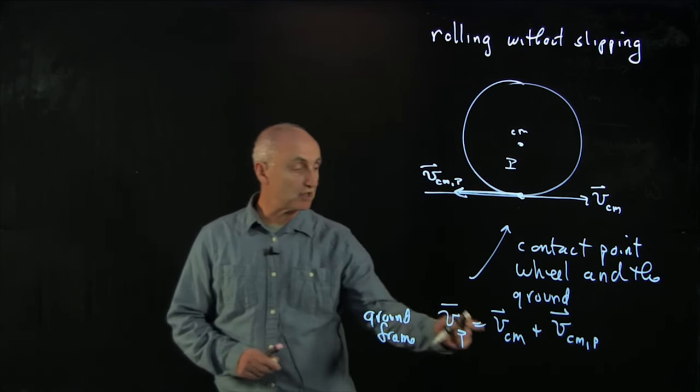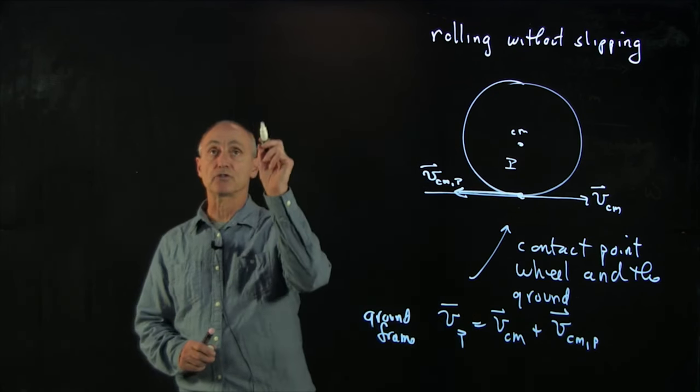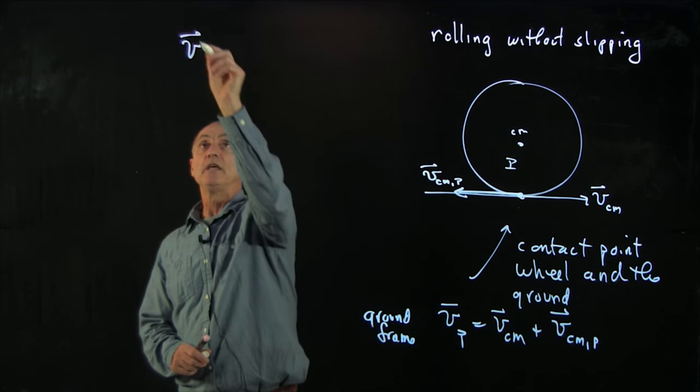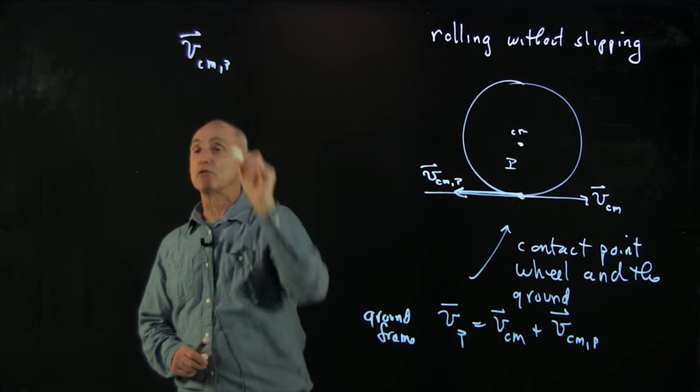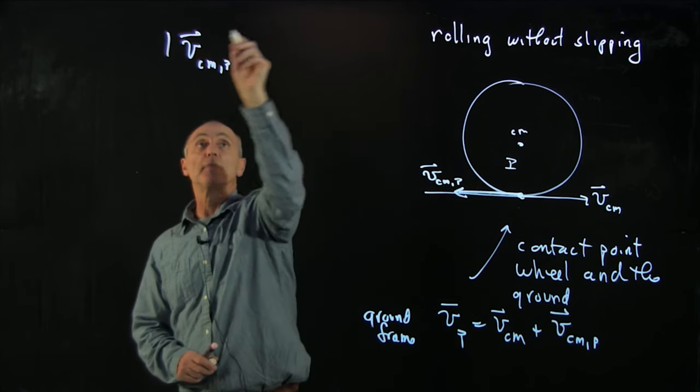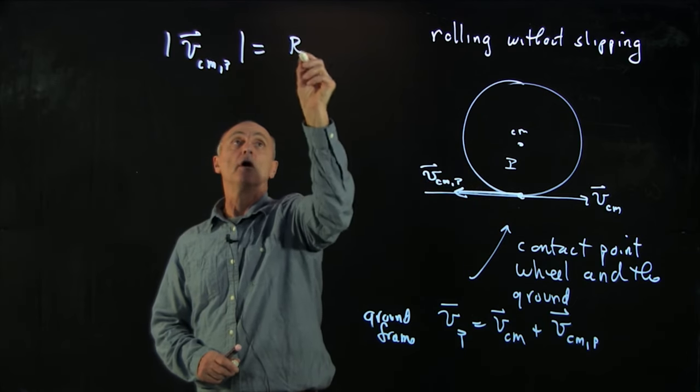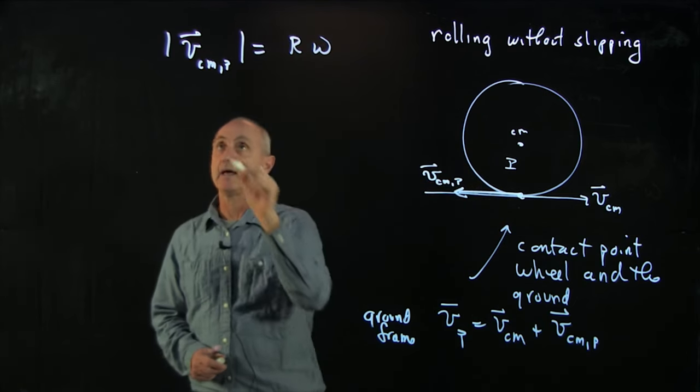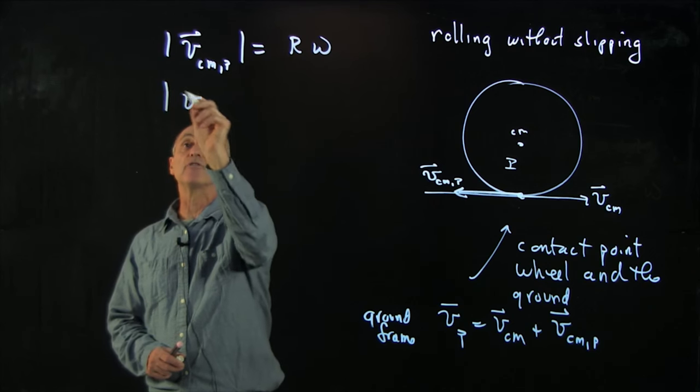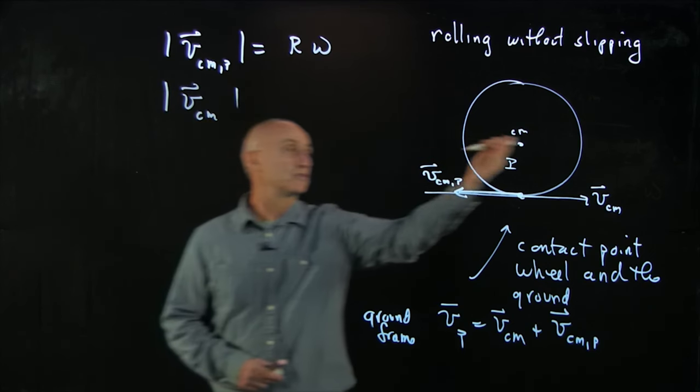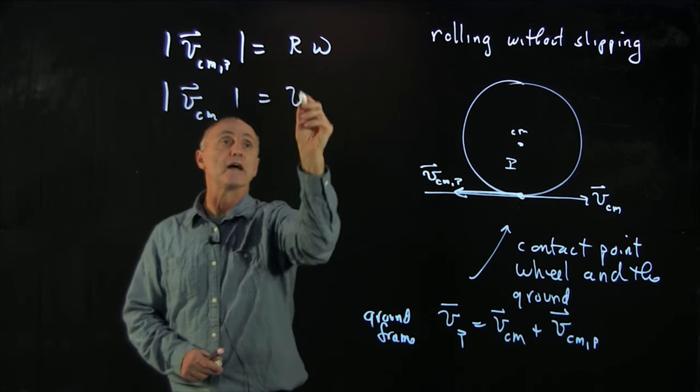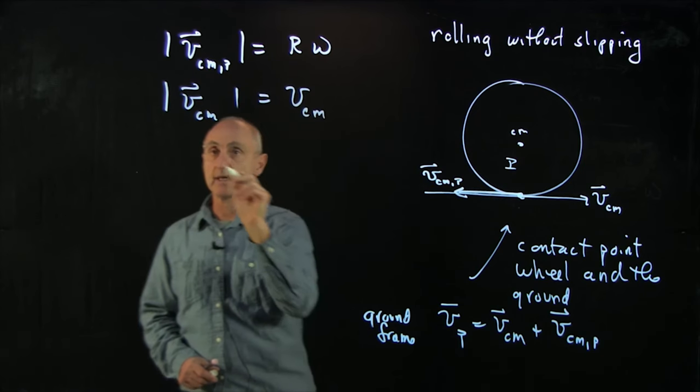So we want to consider the magnitudes of these two terms. The velocity in the center of mass frame of a point on the rim has a magnitude equal to r omega. And we said that the velocity of the center of mass, we call that vcm.